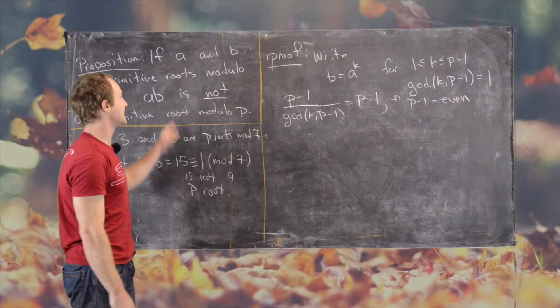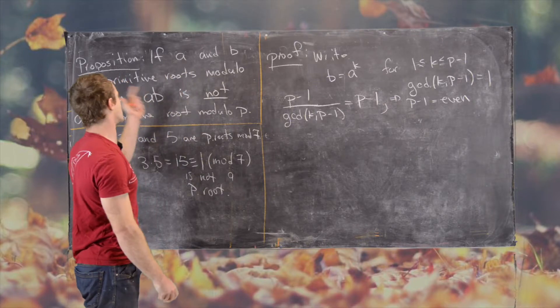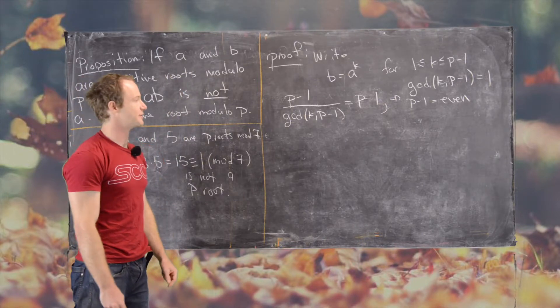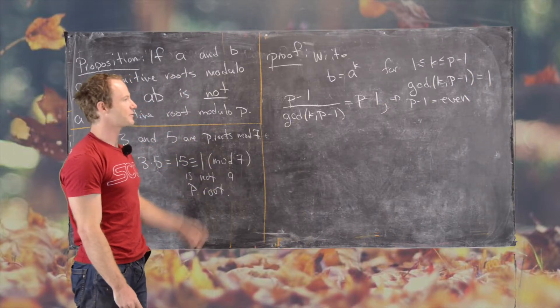And in that case, if P is equal to two, there aren't two distinct primitive roots modulo P. There's only one, and everything breaks down here.